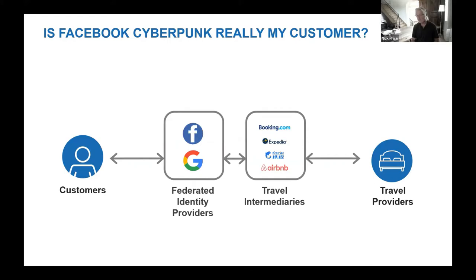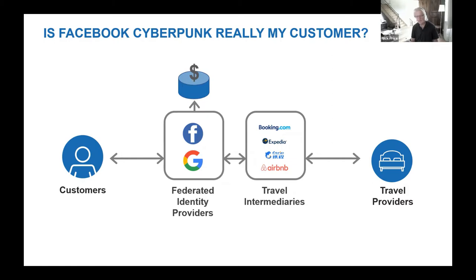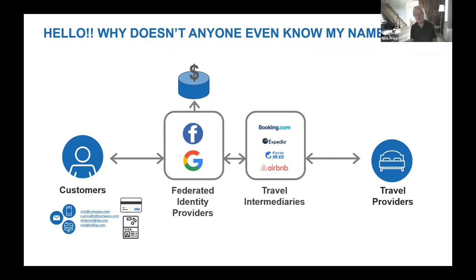But the structure of our industry and the considerable presence of travel intermediaries makes it difficult for travel providers to have good visibility of the arriving customer. Add to this the widespread use of easy federated identity mechanisms provided by large social media and search companies, which very clearly benefit financially from the provision of this so-called free service. Travel providers are further distanced from the arriving customer — is Facebook cyberpunk really my customer? A single customer can have multiple identifiers.